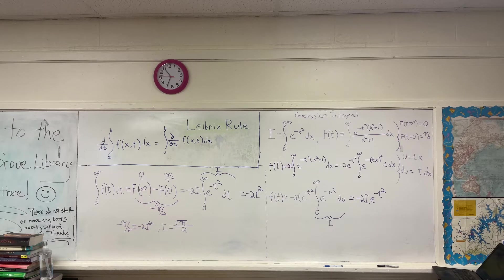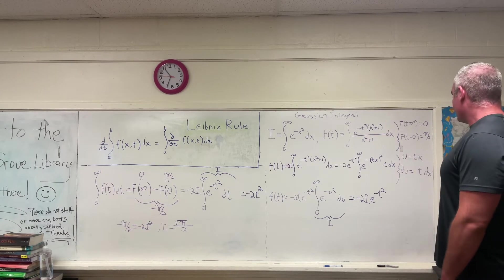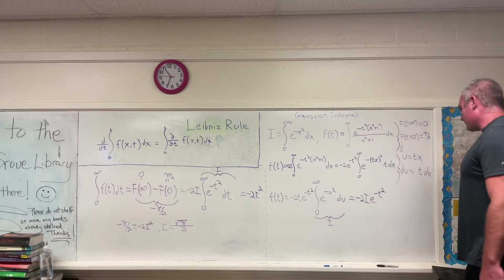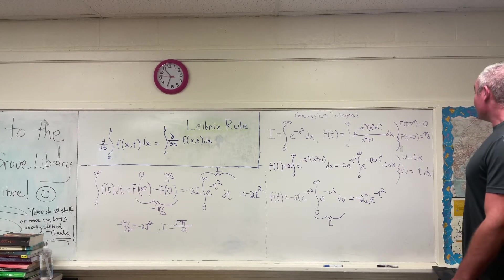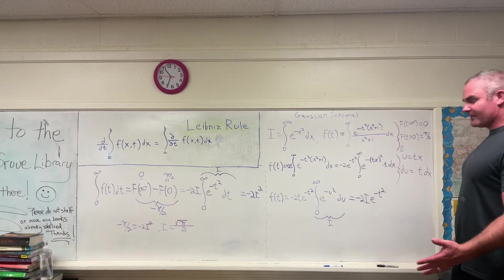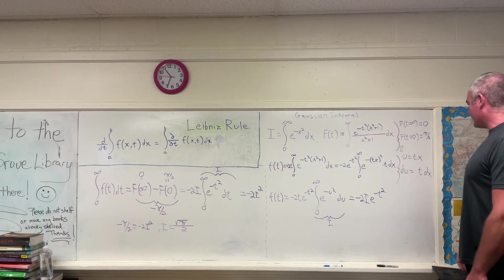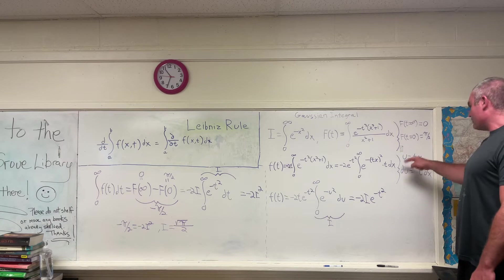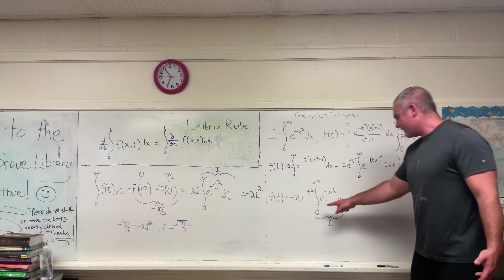DU is equal to T DX. Using that substitution, we get the following. F of T is equal to negative 2T times e to the negative T squared times the integral from zero to infinity. It's still from zero to infinity because making this substitution will not change our bounds of integration — if you plug in zero for x you get zero for U, and if you plug in infinity for x you get infinity for U.